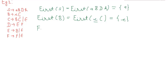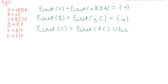Then we calculate first(C), which is equal to first(small b, capital C) union first(epsilon). This will provide us {b, epsilon}.